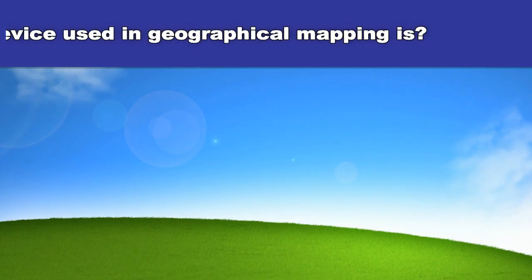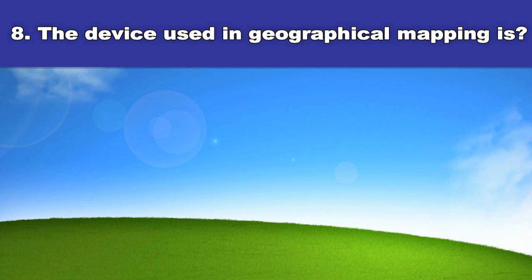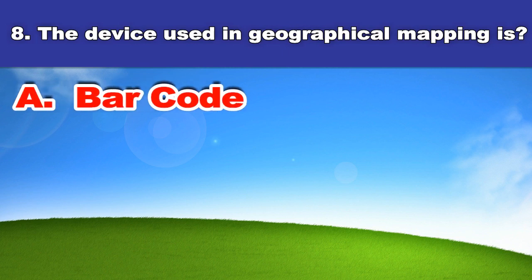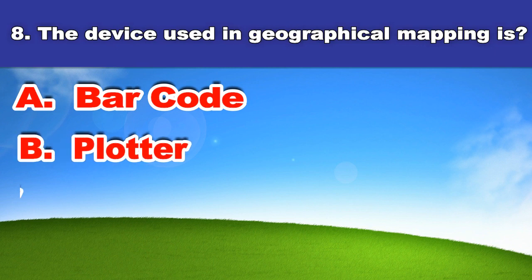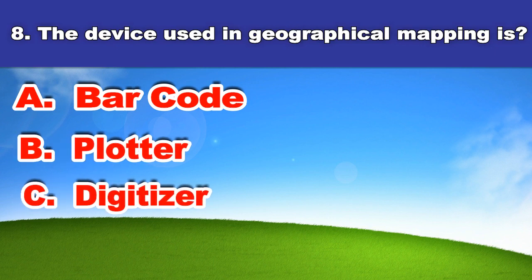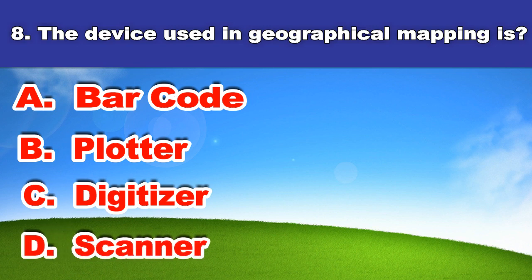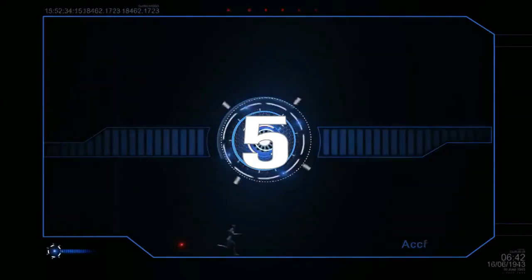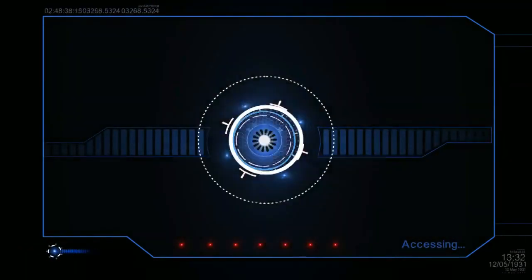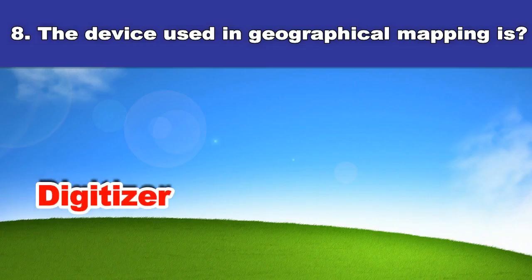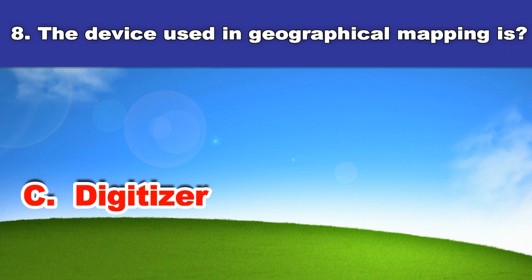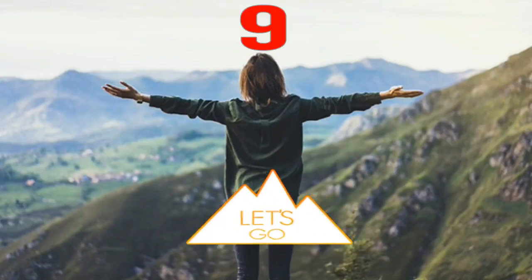Eighth question. The device used in geographical mapping is: A. Bar code, B. Plotter, C. Digitizer, D. Scanner. And the answer is: Digitizer.